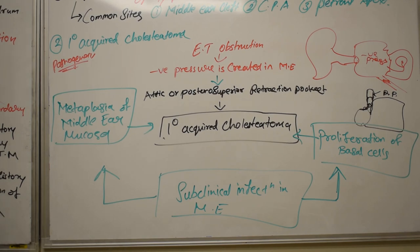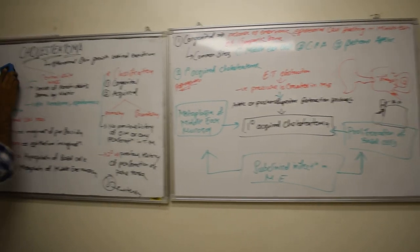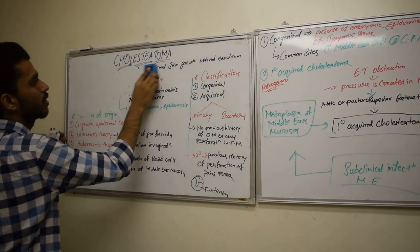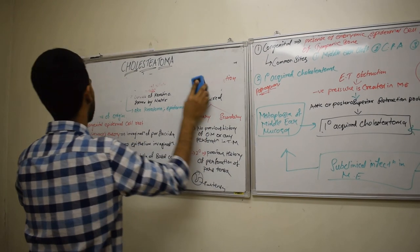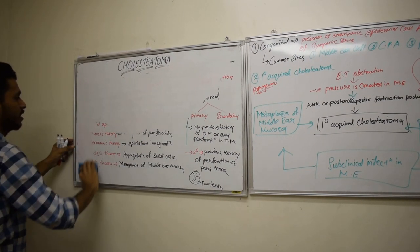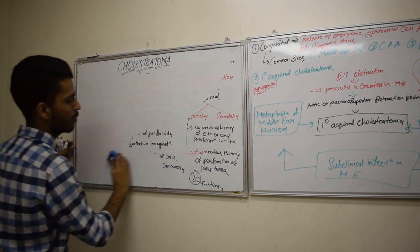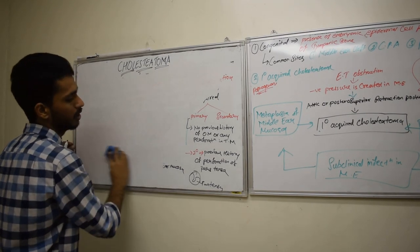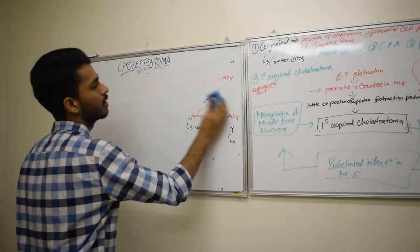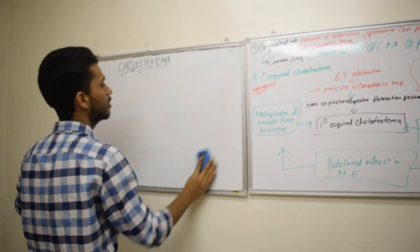So that was how primary acquired Cholesteatoma occurs. To recap what we have discussed so far: what Cholesteatoma is, its theories of genesis — congenital epidermal cell rests, Wittmaack, Habermann's, Ruedi's, Sade's — and the classification: congenital and acquired.